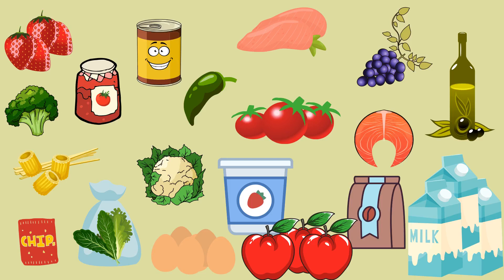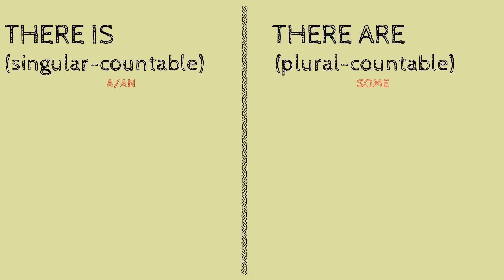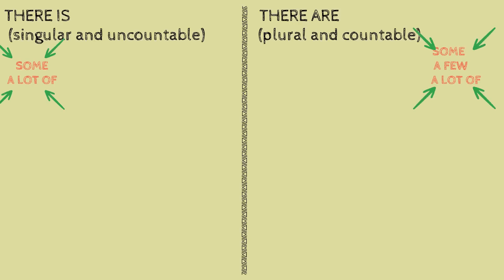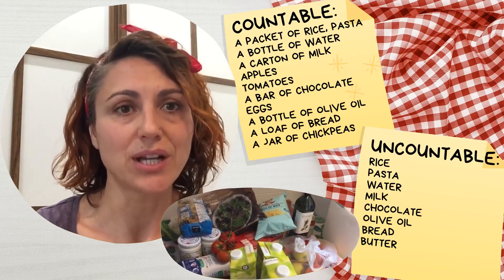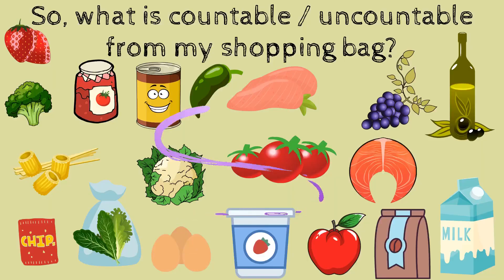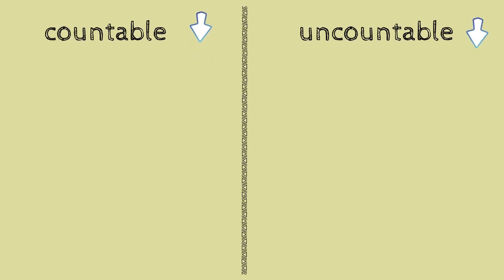Now, can you help me to describe what's in my shopping bag using 'there is' and 'there are'? Once we have reviewed 'there is' and 'there are', let's look at what nouns are countable and which ones are uncountable. This is today's lesson so far, and I'll send you a new video explaining how much and how many to ask for quantity.